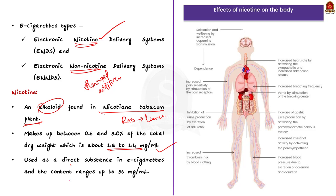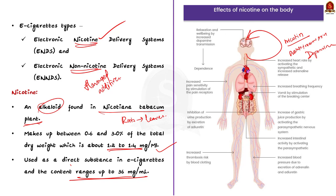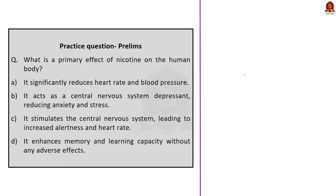In the brain, nicotine increases the release of neurotransmitters which help regulate mood and behavior. Dopamine — one of these neurotransmitters — is released in the reward center of the brain and causes feelings of pleasure and improved mood. The more you smoke, the more nicotine you need to feel good. Nicotine can also cause increases in blood pressure, heart rate, blood flow to the heart, and narrowing of the arteries. It may also contribute to hardening of arterial walls, which can lead to heart attack. What is the primary effect of nicotine on the human body? The answer is C: it stimulates the central nervous system, leading to increased alertness and heart rate.